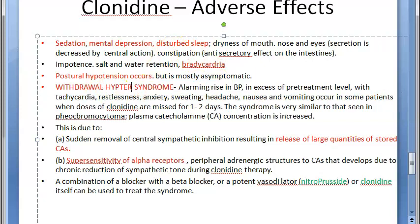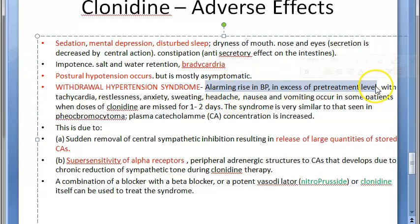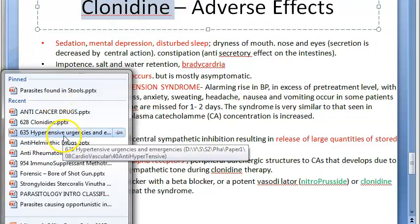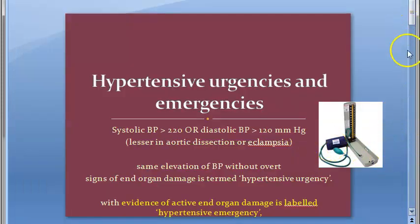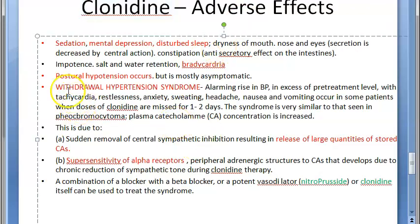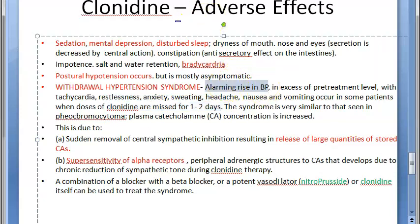A critical adverse effect is withdrawal hypertension syndrome. If the patient misses clonidine for just one to two days, there is an alarming rise in blood pressure — even above the pre-treatment level. This can lead to hypertensive urgencies and emergencies. Clonidine withdrawal is actually listed among the causes of hypertensive emergency.